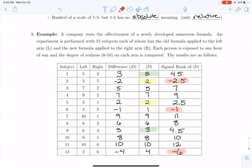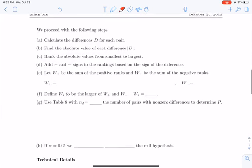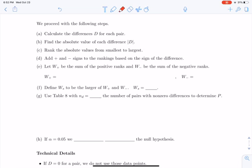Okay, so what are we going to do with these numbers? Well, we've already calculated the differences for each pair. We found the absolute values of the differences. We ranked the absolute values from smallest to largest. We added plus signs and minus signs to the rankings based on the sign of the difference. And now I'm going to compute two numbers. W plus will be the sum of the positive ranks and W minus will be the sum of the negative ranks.